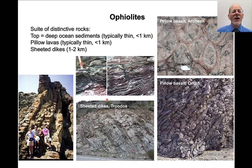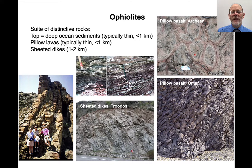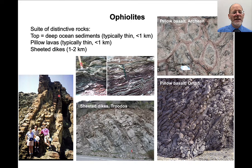Ophiolites are a suite of distinctive rocks with a particular stratigraphy. At the top are deep ocean sediments — largely cherts and mudstones, so silica-rich rocks. Then there are pillow lavas, which have elongate forms that, when cut, show rounded shapes that reminded people of pillows. Below those are sheeted dikes — just a series of basaltic dikes, one after the other, intruded into a sequence.